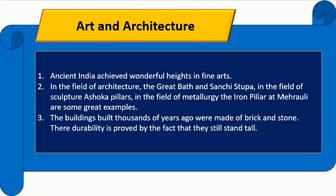Ancient India achieved wonderful heights in fine arts. In the field of architecture, the Great Stupa and Sanchi Stupa stand out. In the field of sculpture, the Ashoka Pillars are notable. In the field of metallurgy, the Iron Pillar at Mehrauli is a great example. The buildings built thousands of years ago were made of brick and stone, and their durability is proved by the fact that these structures still stand tall.